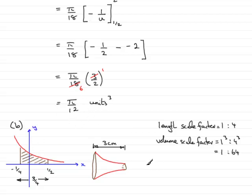So in other words, the volume of the paperweight is now going to equal 64 times π over 12. And if you work that out, you'll find that you get 16π over 3, and that would be centimeter cubed. And that brings us to the end of part B.